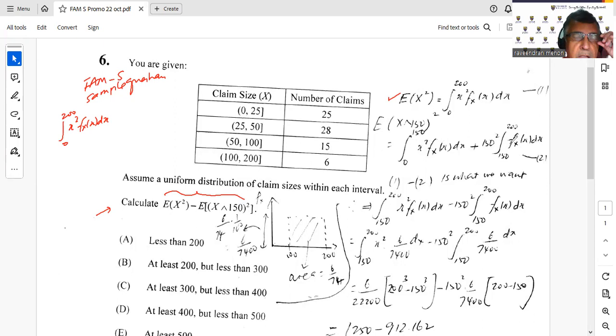Let me say that again. We are trying to find the expected value of x limited by 150 whole thing squared. So up to 150, pretty easy, just x, so we have x squared fx. So we are integrating from 0 to 150, x squared fx dx. And then more than 150, we have 150 squared. The value of x is just 150. So 150 squared fx dx. Take note, the limits going from 150 to 200.